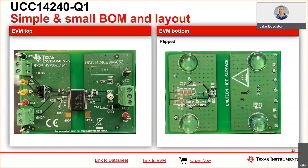If you're interested in experimenting with the UCC14240-Q1, I would recommend requesting one of our EVMs as shown here in high detail. You'll note that the only passives required to operate the IC are resistors and capacitors — a very simple and easy design in a highly dense layout.